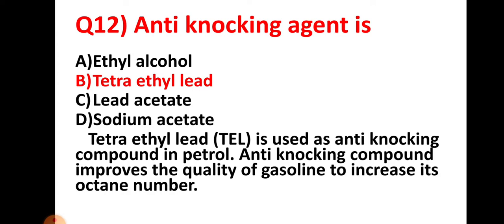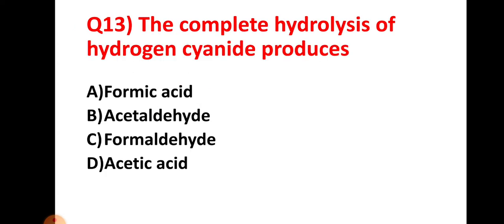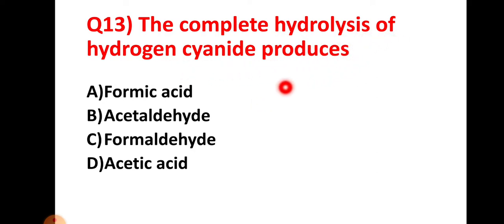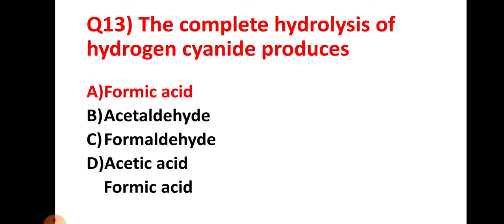Question number thirteen: the complete hydrolysis of hydrogen cyanide (HCN) produces — the right answer is formic acid, which is option choice A.